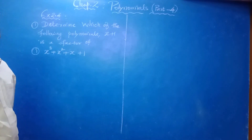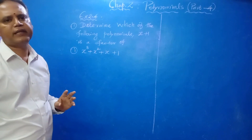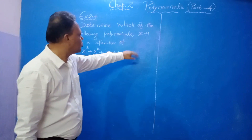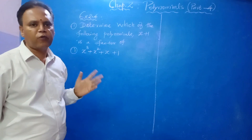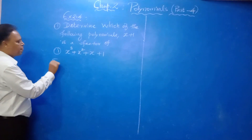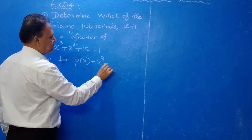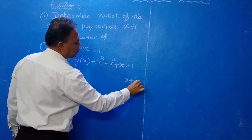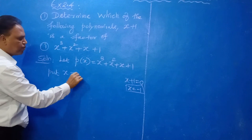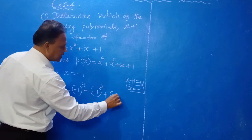Next we see Exercise 2.4. Determine which of the following has X plus 1 as a factor. For the first subdivision, we have to check whether X plus 1 is a factor of the given polynomial. Let P of X equal to the given polynomial. In the rough column, put X plus 1 equal to 0, which gives X equal to minus 1. So we need to find P of minus 1.